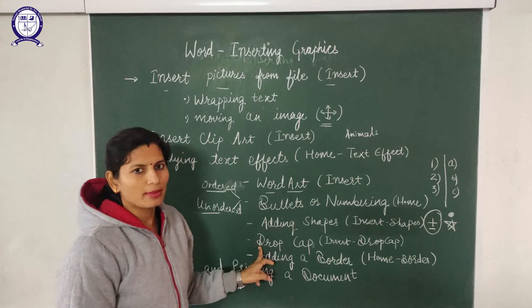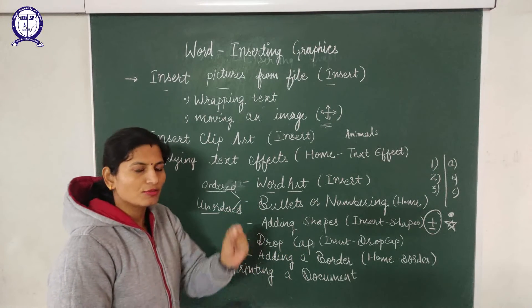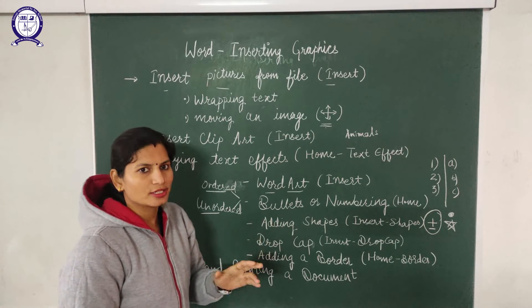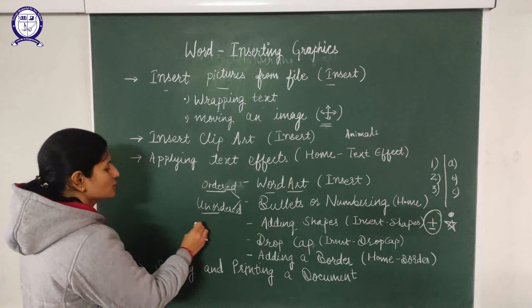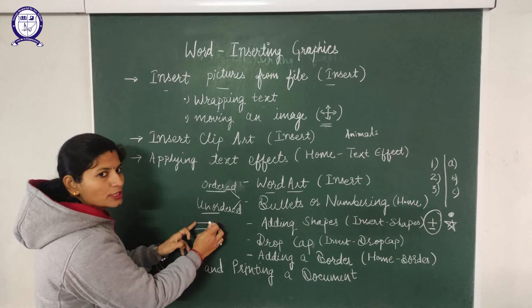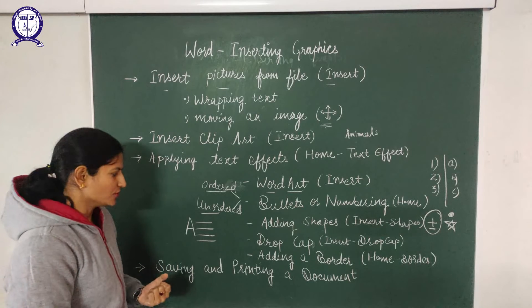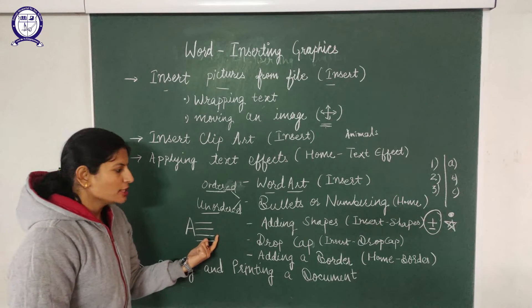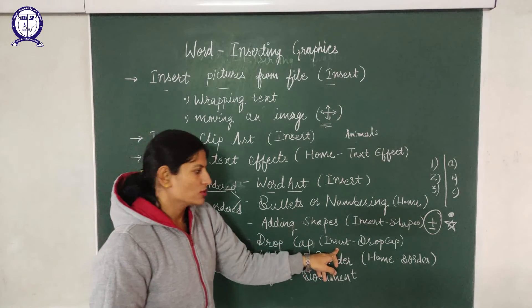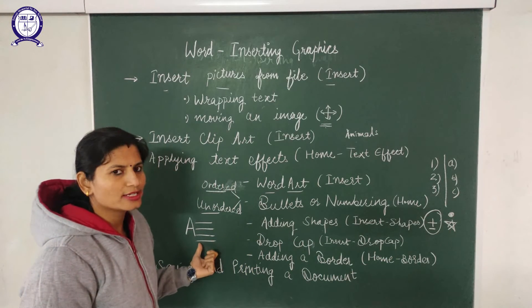The next feature is Drop Cap. When a paragraph starts, the first character of the paragraph appears in a large capital form spanning two or three lines — that is the Drop Cap feature. For example, if there are four lines in a paragraph, the first character of the first word appears in large capital form. This option is available under the Insert tab and is used to enhance the appearance of your paragraph.